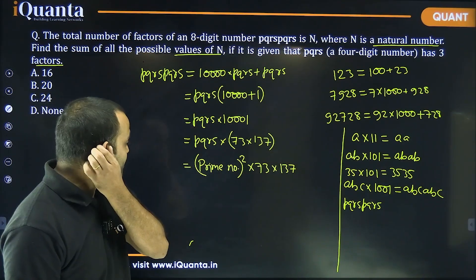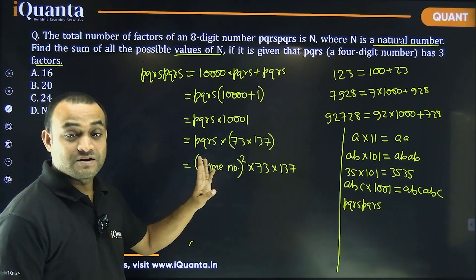Prime number squared into 73 into 137. Now, once again, PQRS is a four digit number.